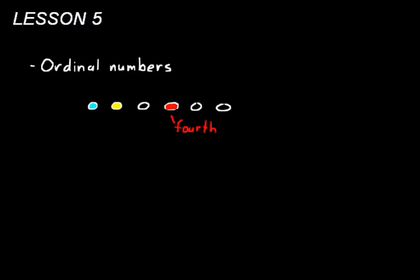We'd say the blue circle is the first circle in that group of circles. And then the yellow circle — that one's called the second circle. We use the word 'two' if we were describing the count of circles, but we don't say the 'tooth circle'; we say the second circle. The third circle is just a clear circle with a white border.